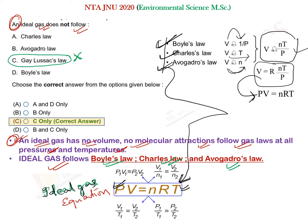Remember these three laws — Boyle's, Charles', and Avogadro's — and how combining them gives the ideal gas equation PV = nRT. If you know these three laws, you will be able to solve any ideal gas related question.